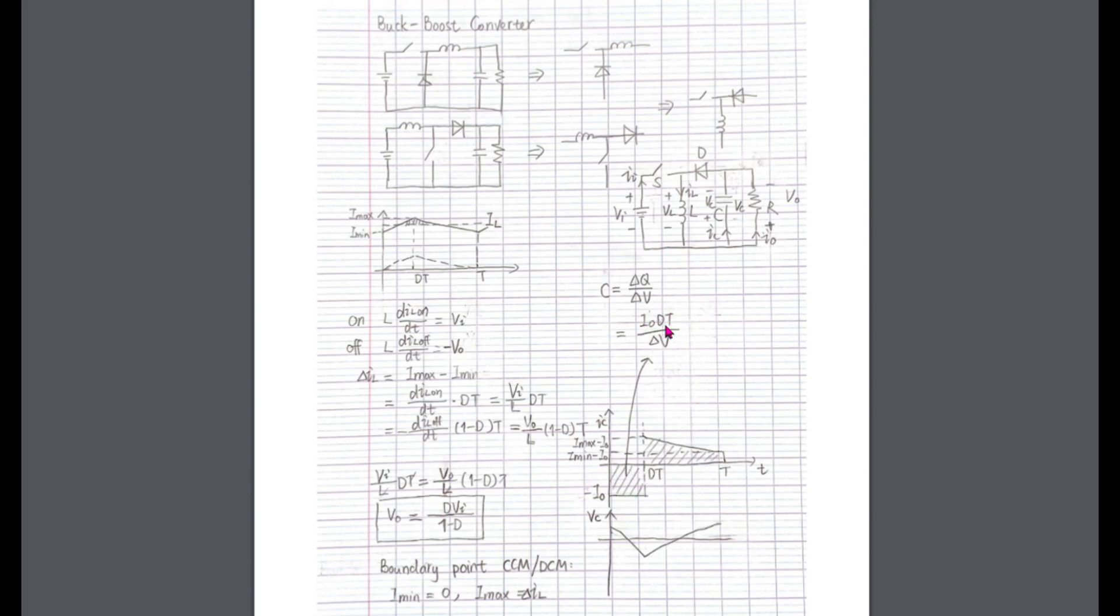Now let's imagine that we keep increasing the load resistance R. As R increases, the output current, hence the average inductor current, will drop. And eventually the lowest point of the current waveform will hit the zero point. Since when the switch is off, not enough current is provided, the current will remain zero until the switch is turned on again.